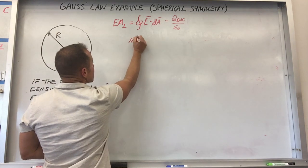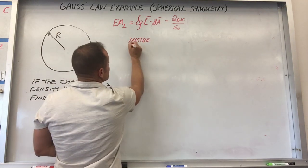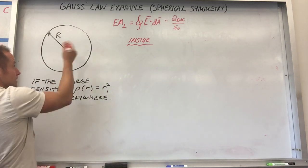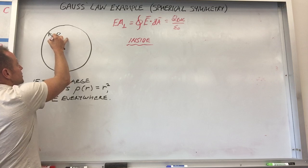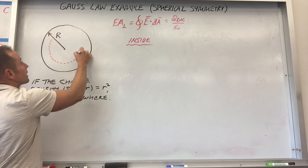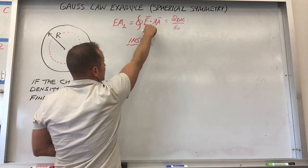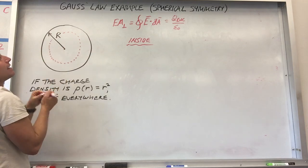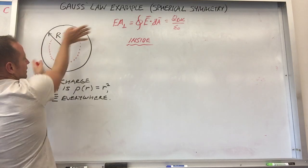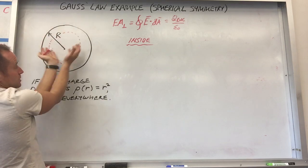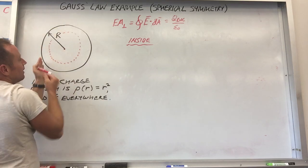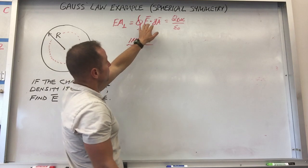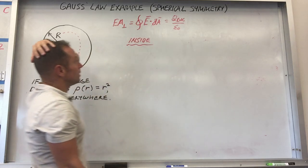First, let's go inside the ball. When you're inside, the Gaussian surface you want to choose is just a sphere — you want to match the symmetry. You want the integral to collapse into E times A-perp. The problem with choosing a square is that the field is pointing radially, so to be perpendicular to that field you want a sphere. If you draw a cube, the field won't always be perpendicular to the surface of the cube, and the flux will be much harder to calculate.